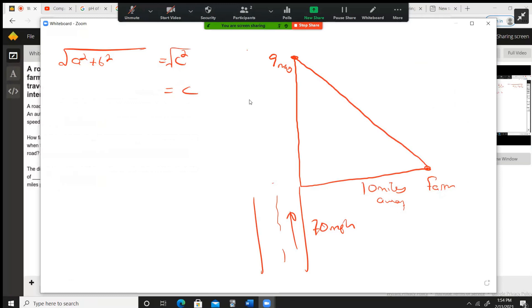So now we're going to do 9 squared plus 10 squared equals—I calculated this earlier—13.454 miles.